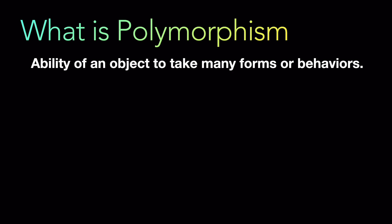What is polymorphism? Polymorphism is the ability of an object to take many forms or behaviors. It is a fundamental concept in object-oriented programming and it allows us to write code that is more flexible, reusable, and easy to maintain.